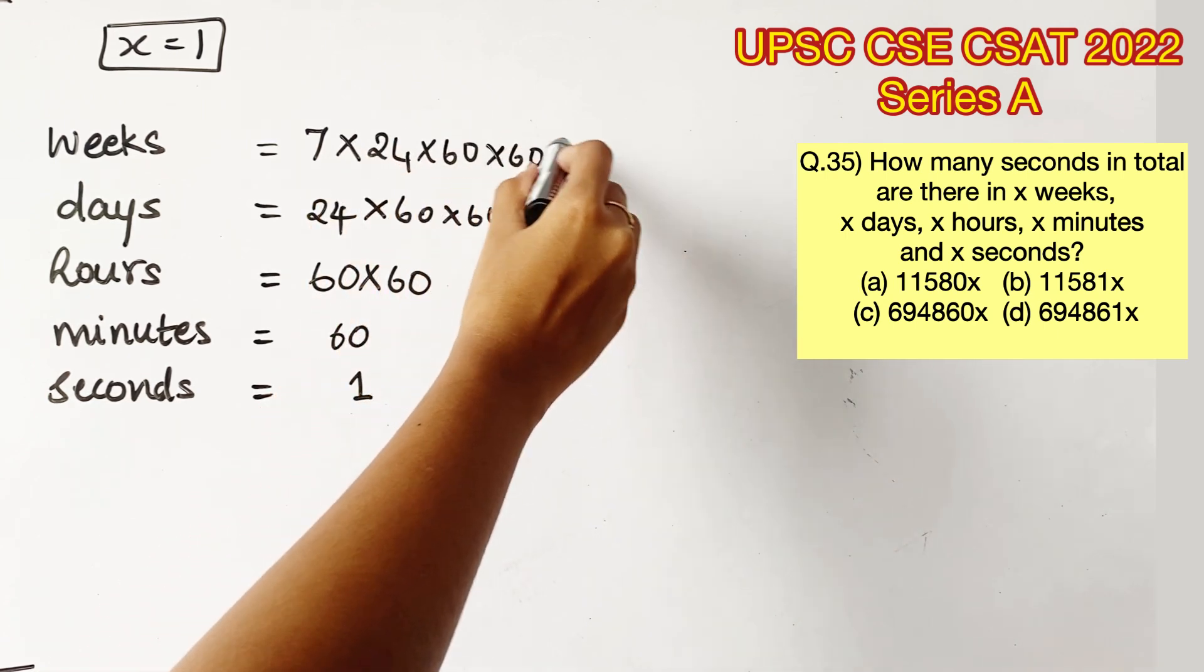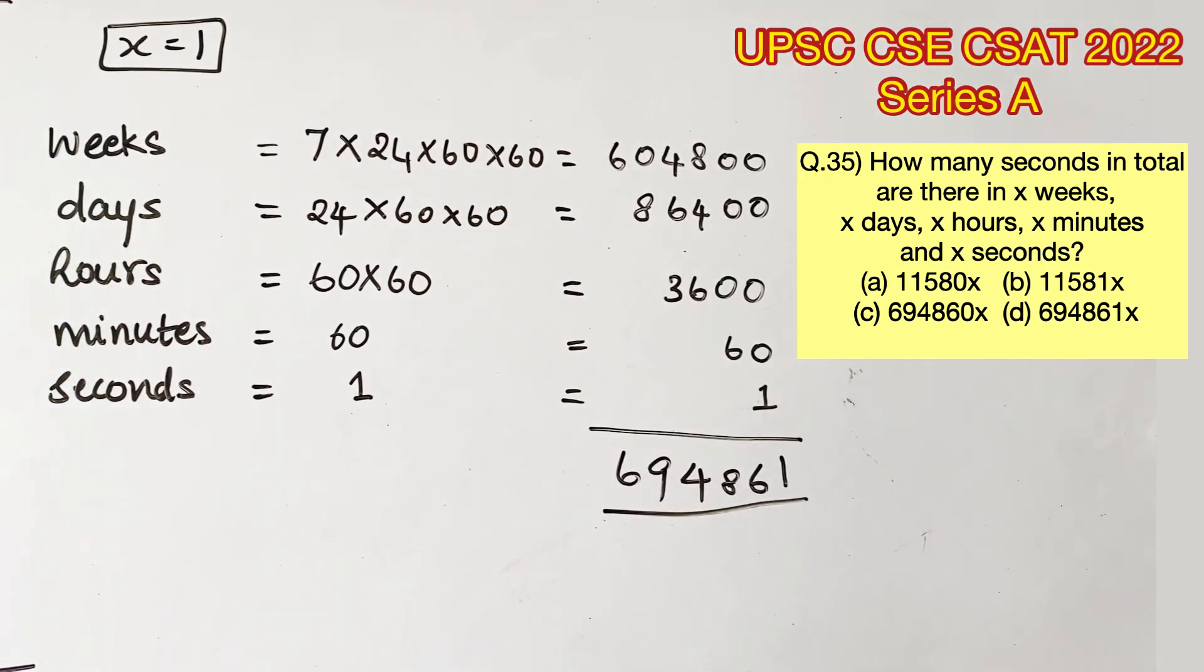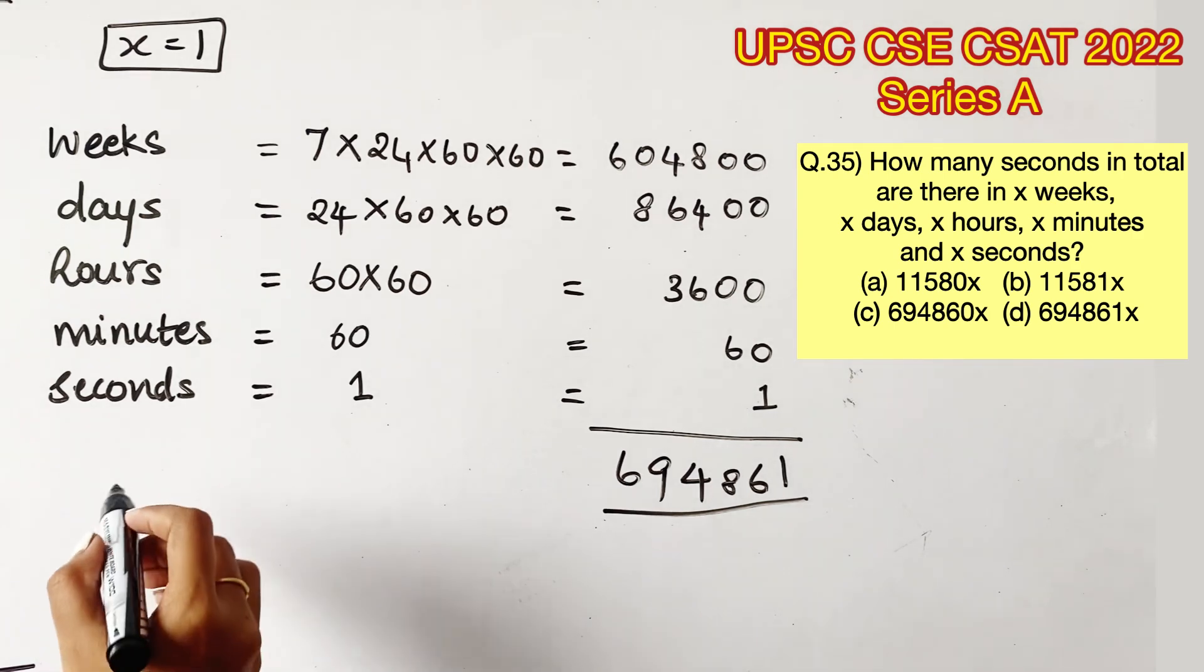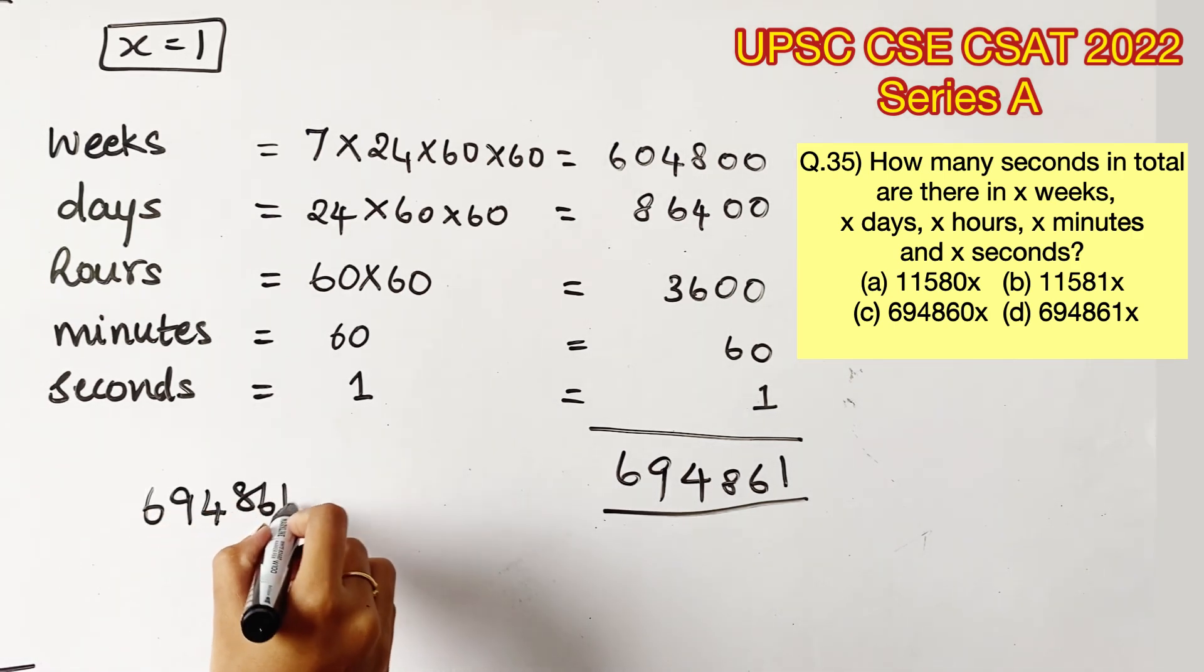Add all these values up. We will get the number of seconds while x is equal to 1. Adding all these values up we get 6,94,861. Now this value is when x is equal to 1.